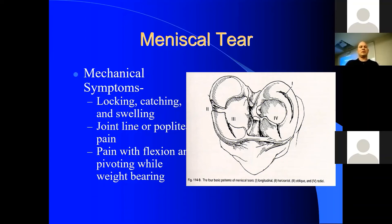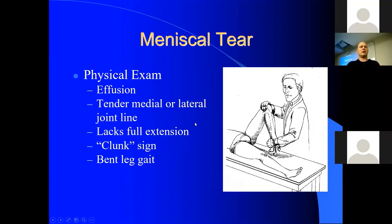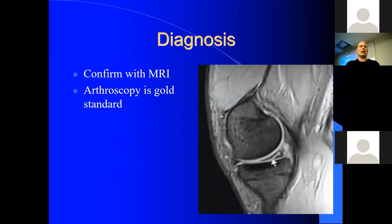Meniscal tears present with joint line tenderness, catching, locking, swelling with activity, and pain when the knee is slightly flexed or pivoting. Types include radial, transverse, and bucket handle tears. On exam there may or may not be an effusion — swelling is usually not tense. They typically have pain at end range of motion, both full extension and full flexion. A clunk sign during McMurray's and walking with a slightly bent knee are also common findings. Diagnosis requires an MRI — it won't show on x-ray, and the physical exam alone can be misleading.